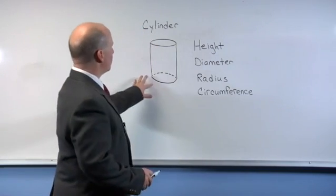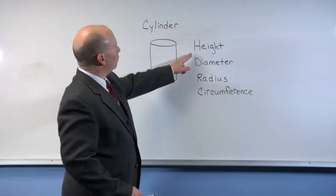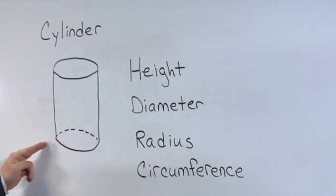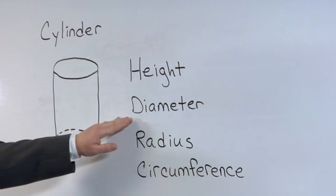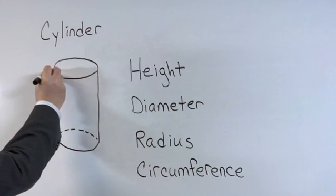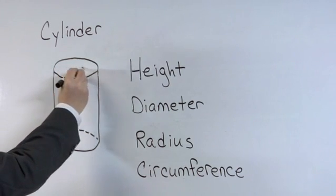Looking at this picture, we talk about the height of a can or of a cylinder as being the height from top to bottom. The diameter is equal to the width, which would be the line straight across.